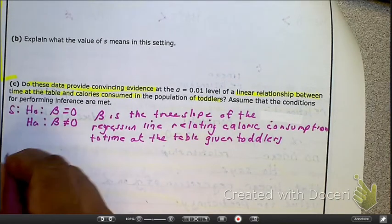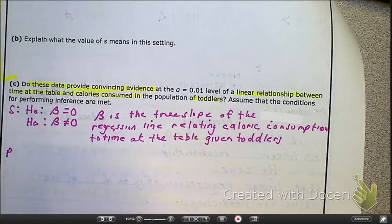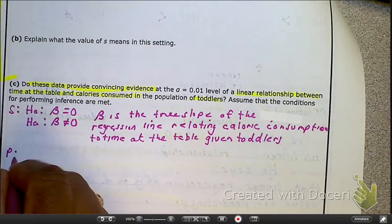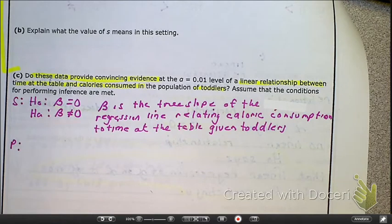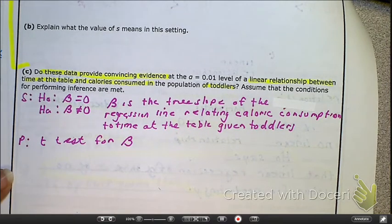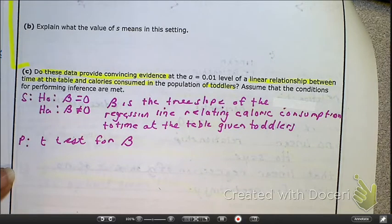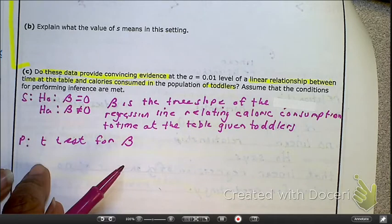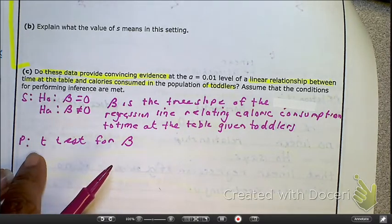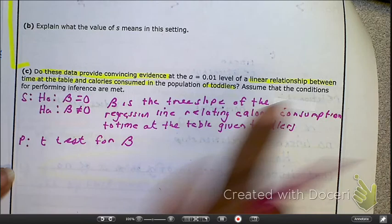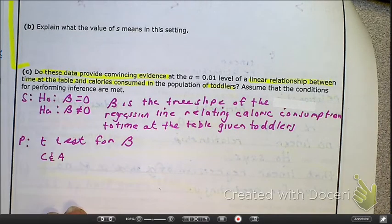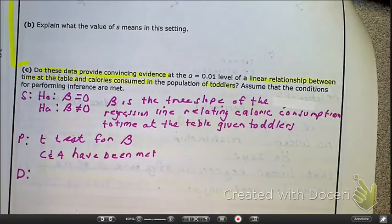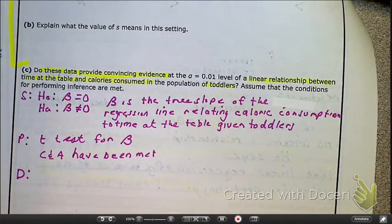Now, next is our plan. I've got to name it. So I can name it under the plan or under the state, whatever. What is it? Yep, you're right. A t-test for B or a t-test for the slope, the population slope. And remember, this can go up here or here. And yes, CNAs have been met. Now, let's jump into the do. First time we've done this.